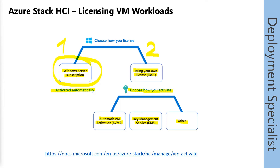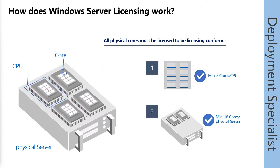Windows Server subscription in preview is not charged, so you can use it without any costs. Costs will be provided as soon as the preview ends. Bring your own license is already available. In the bring your own license scenario, the physical cores are relevant for licensing — minimum 16 cores have to be licensed. Every active and also every disabled core has to be licensed, but only the physical cores.